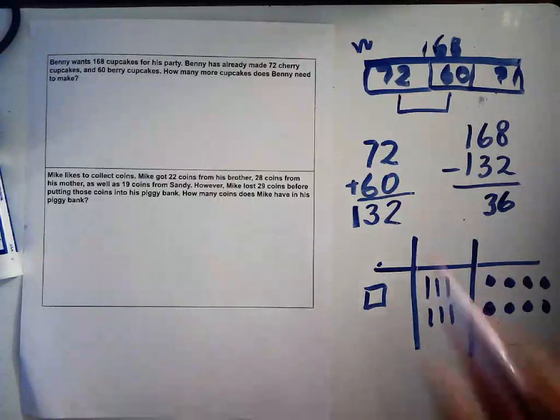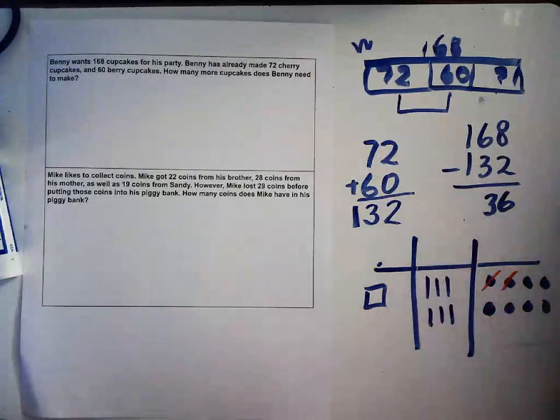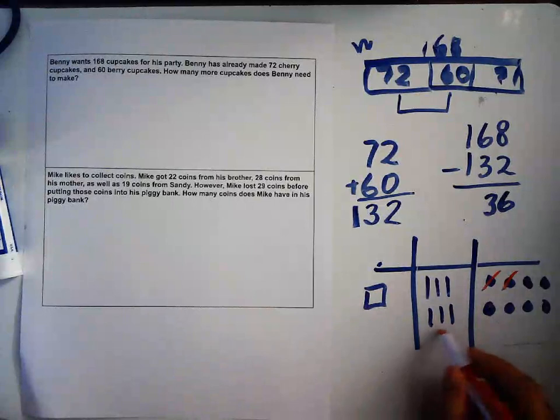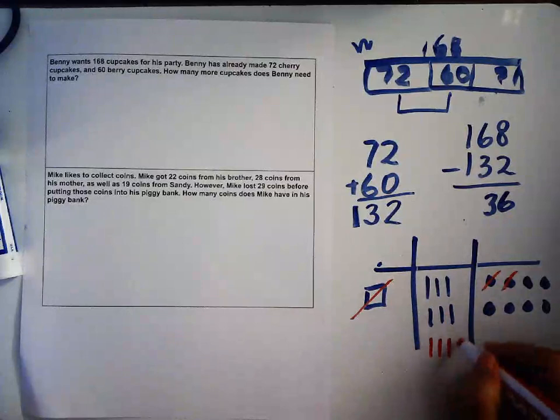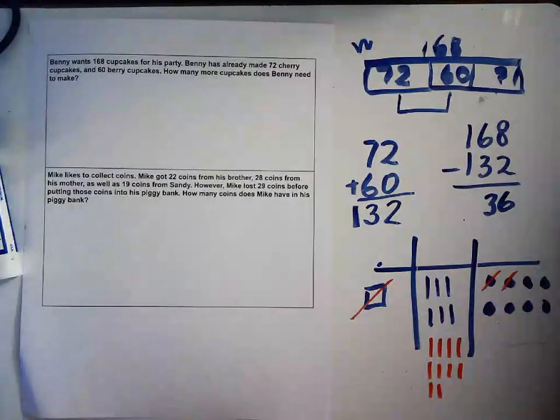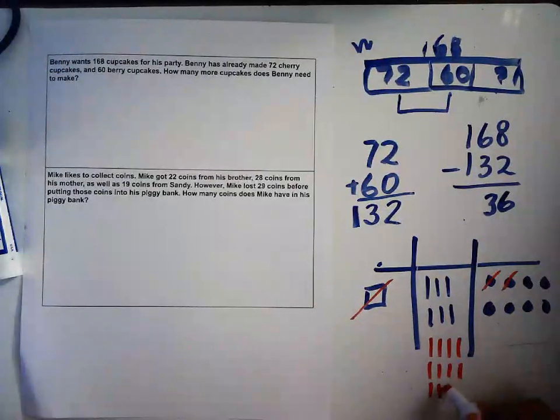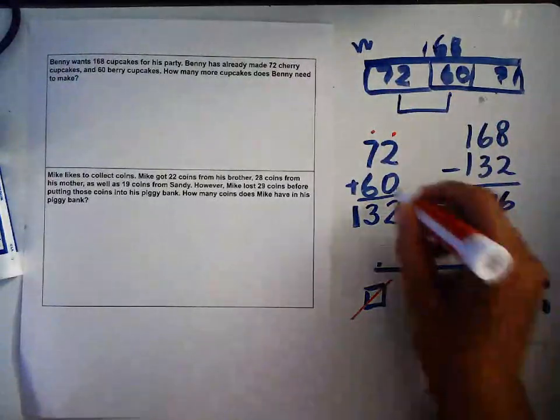First, let me subtract 72. I'll do 2 ones and 7 tens. I don't have enough for 7 tens because I only have 6 here, so I'm going to have to use this and move it over here. Now I can subtract 7. This is 48, so 1, 2, 3, 4, 5, 6, 7. Making sure that I have 7. Okay, so I've done this 72.